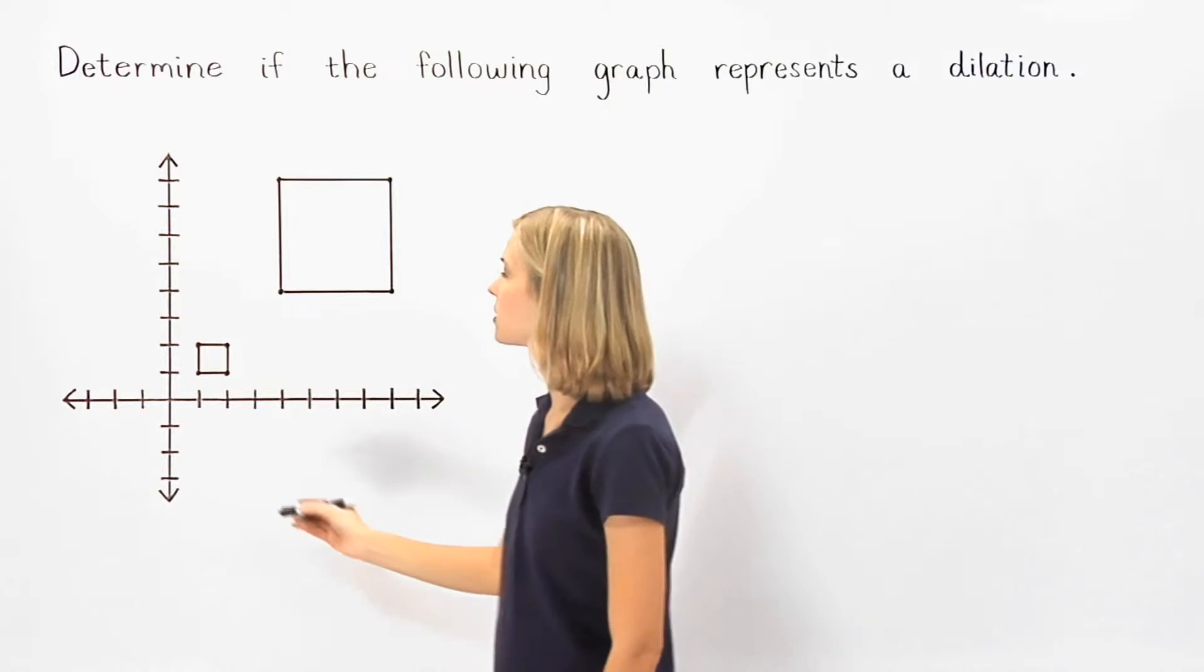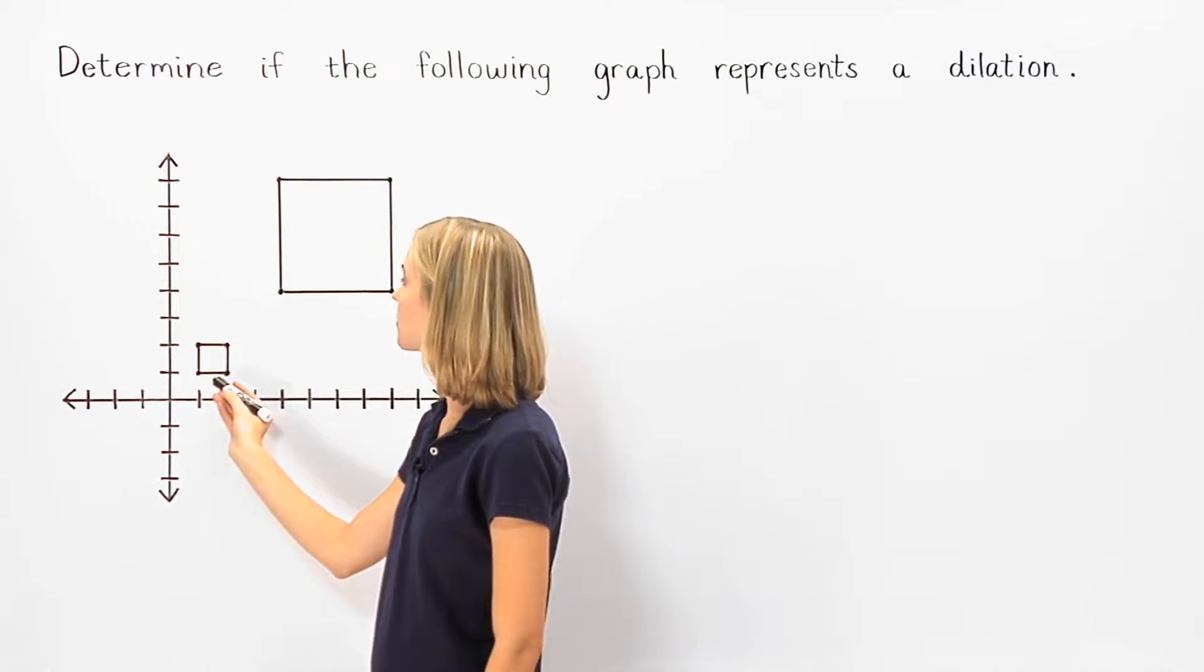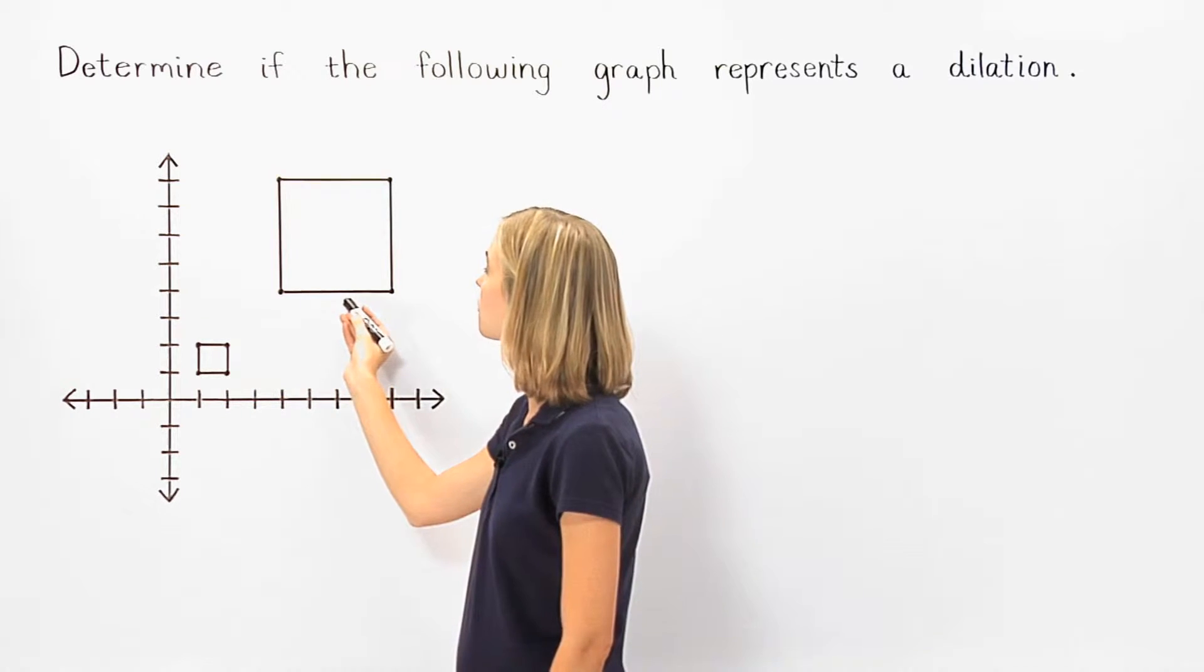Notice that the figure on the left is a square with sides that each have a length of one unit, and the figure on the right is a square with sides that each have a length of four units.